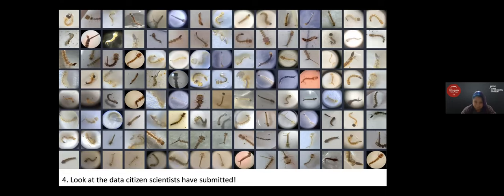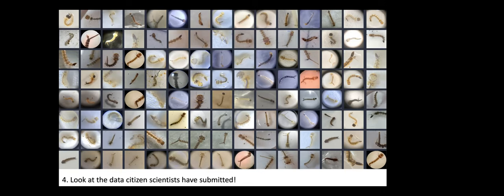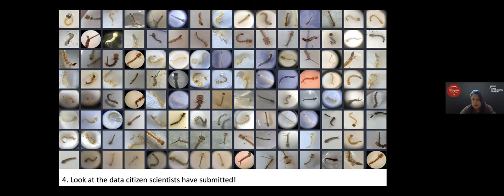What does citizen science data look like? We ask citizen scientists to take pictures of mosquitoes — specifically mosquito larvae, the baby mosquitoes. These look different because they're different species and life stages. Once they come out of the egg they live in water and grow until they're strong enough to become adults and fly away. We don't ask you to photograph adult mosquitoes because then you're close enough to get bitten — but larvae are harmless.